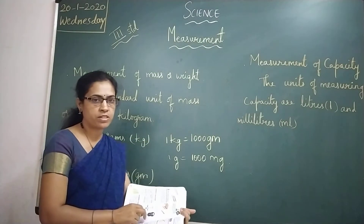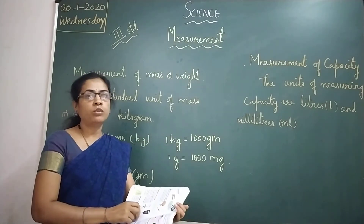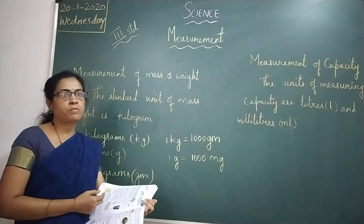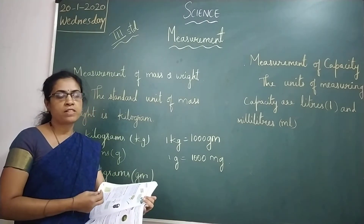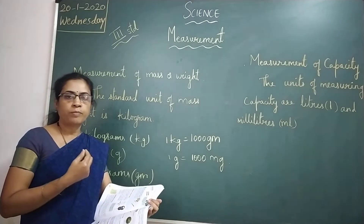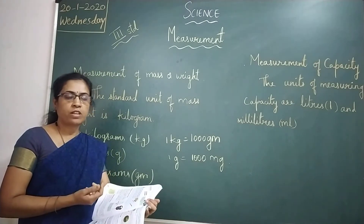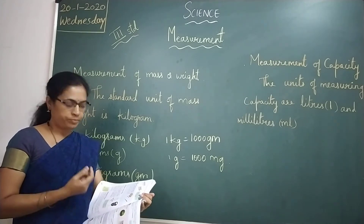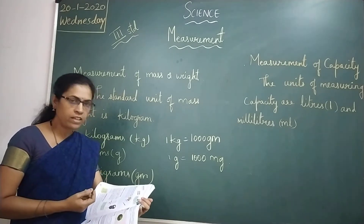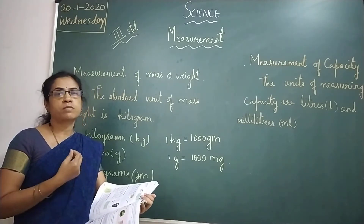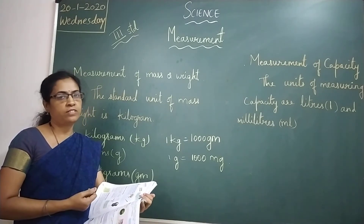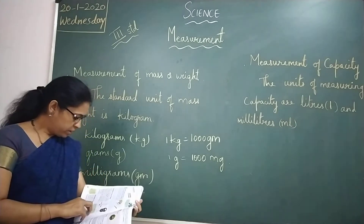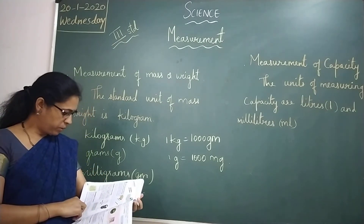Whenever you go to a shop, observe how the shopkeeper uses the electronic balance. It will typically show the total capacity — that is, what is the measure of the weight of what you are buying.